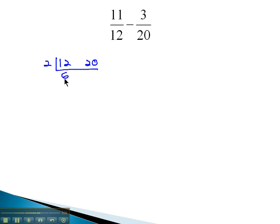They're both divisible by 2, which gives us 6 and 10, and those are both divisible by 2, which gives us 3 and 5. There's now nothing left that divides into both of them.